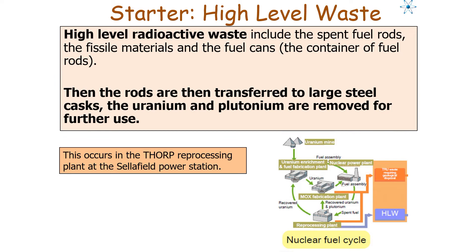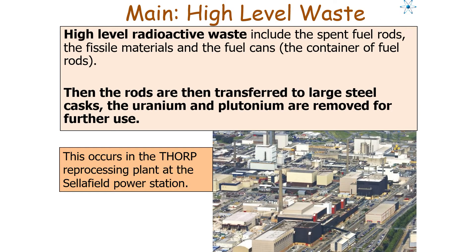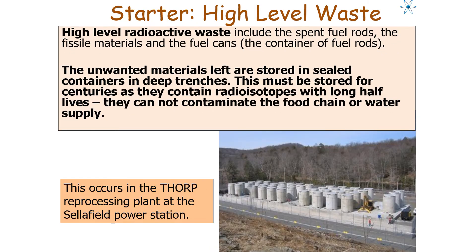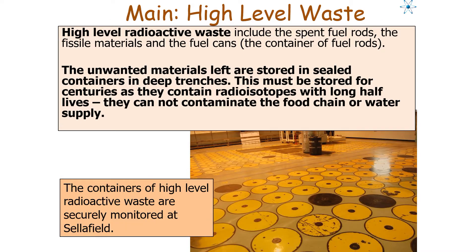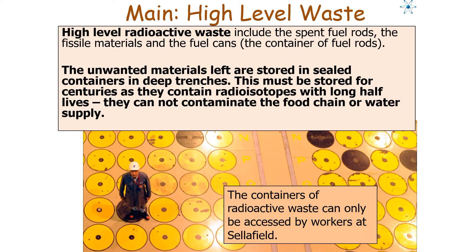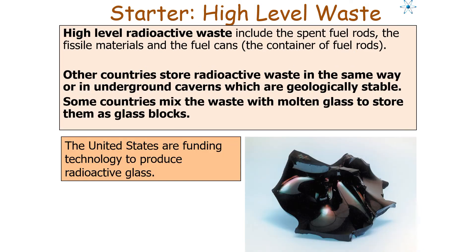The fuel rods are then transferred to a large steel cask, and the unused uranium and plutonium are removed for further use. In the UK, this occurs at the Thorpe reprocessing plant at Sellafield. The process of reclaiming unused uranium for another fission cycle is called reprocessing. After reprocessing, the unwanted materials are stored in sealed containers in deep trenches and must be stored for centuries because they contain radioisotopes with long half-lives, preventing contamination of the food chain or water supply. In the UK, these containers are securely monitored at the Sellafield nuclear complex.